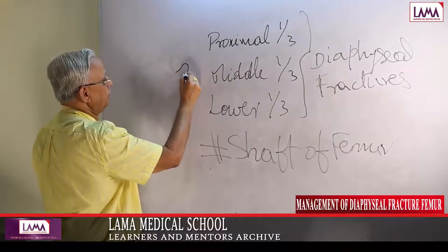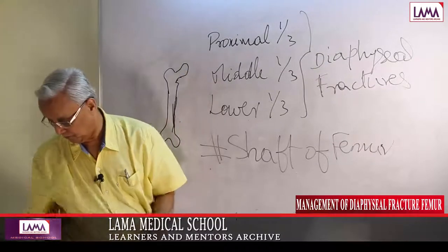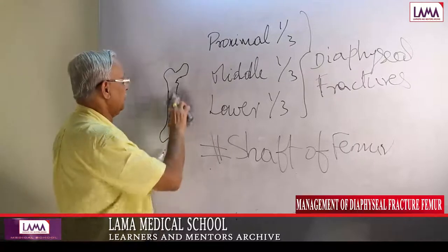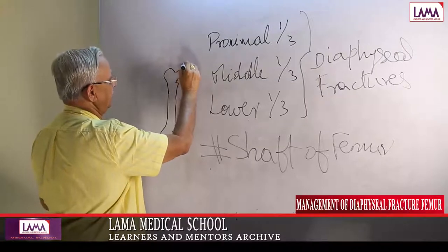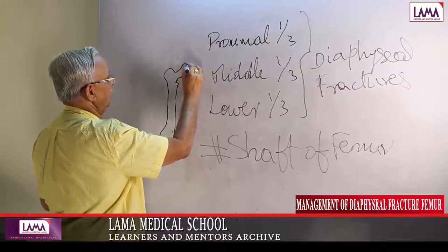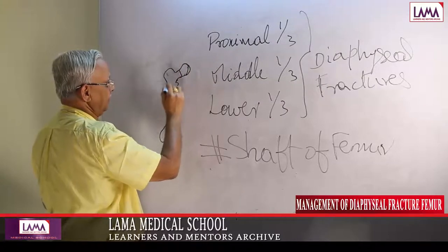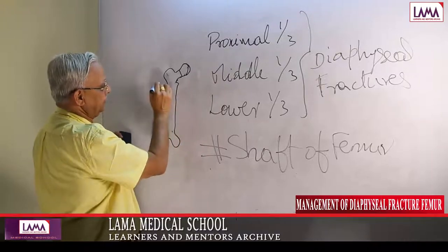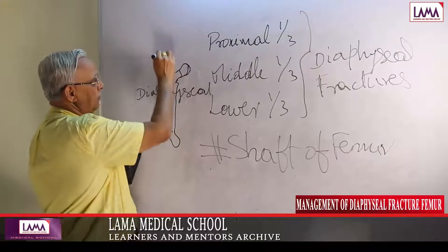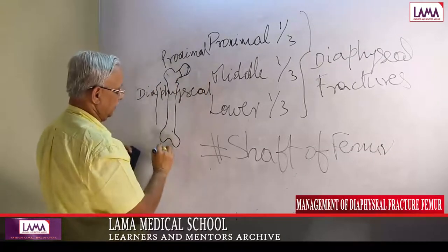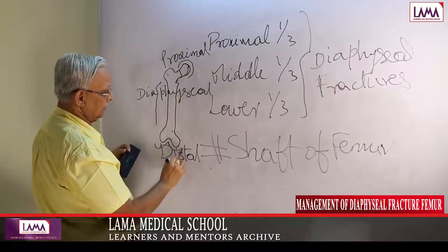Look at this — this is the head, neck, sub-capital region, trochanter region, and then we come to the diaphyseal region. Both proximally and distally, you have joints — one with the hip and one with the tibia at the knee.